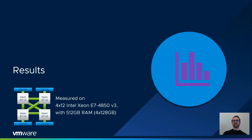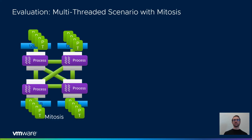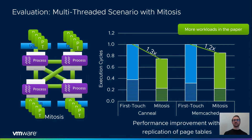Let us now evaluate Mitosis. We evaluate Mitosis using a selection of multi-threaded and single-threaded workloads. In this part of the evaluation, we measure the performance of multi-threaded workloads with and without Mitosis. In the first-touch case, we use a standard Linux setting with a single page table per process. In the Mitosis case, we replicate the page tables among the NUMA nodes the workload is running on. The graph on the right shows execution cycles for k-Nearest Neighbor and Memcached normalized to the default Linux policy. The highlighted parts of the bars indicate the number of cycles spent walking the page table. Mitosis achieves a speedup of 1.3x and 1.2x respectively, improving the performance of multi-threaded workloads. We refer to the paper for more workloads with similar results.